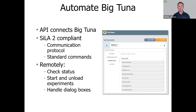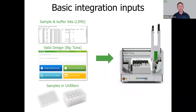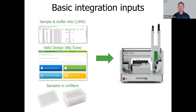The API lets you do things like remotely checking status, starting and unloading experiments, and handling dialogue boxes. Integrating BigTuna into your overall lab process, workflows, or automations is even easier. The sample and buffer list can be automatically taken from your LIMS and imported into BigTuna. The BigTuna software makes it so easy to set up your buffer exchange and concentration protocols with those preset values and also validates them for you.